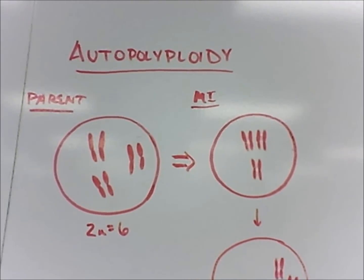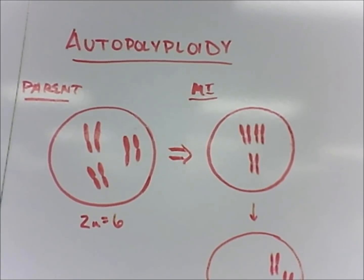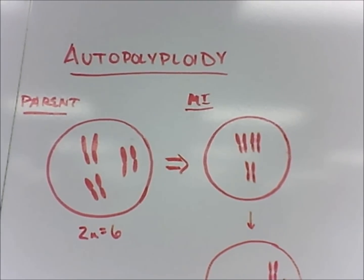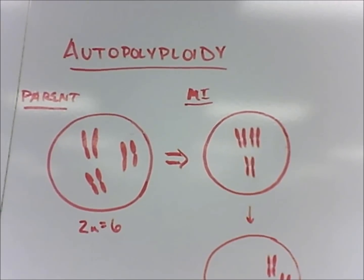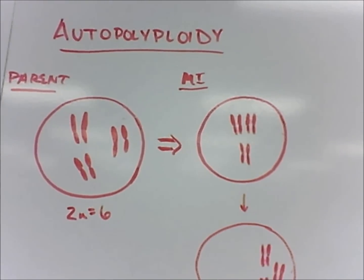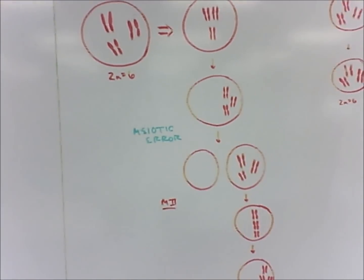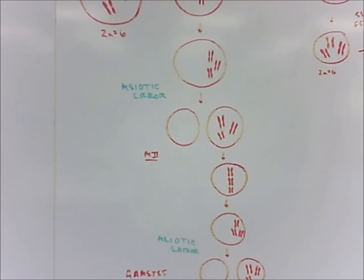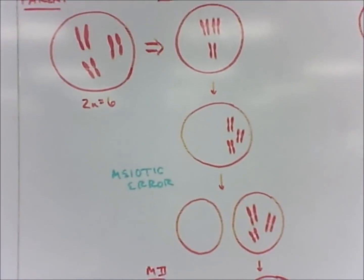The failure of meiosis and gamete production can produce a cell with double the number of the diploid count to a tetraploid count. In other words, the cell doesn't separate its chromosomes during meiosis, and the gametes have the same number of chromosomes as the parent cell.